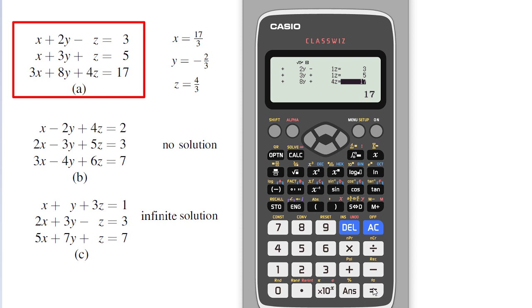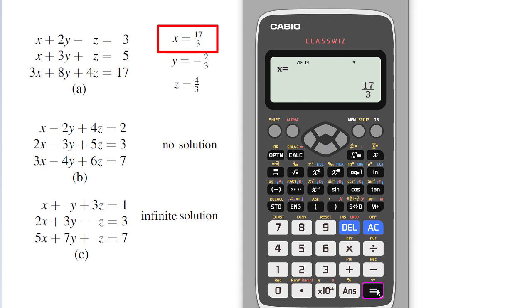When I press all the values then you have to press the equal button one more time and you will get the answer. So I have x is equal to 17 over 3. I again press equal. I will get y value minus 2 by 3 and z value 4 by 3. So when we have a system of equations which have a particular solution our calculator worked fine.